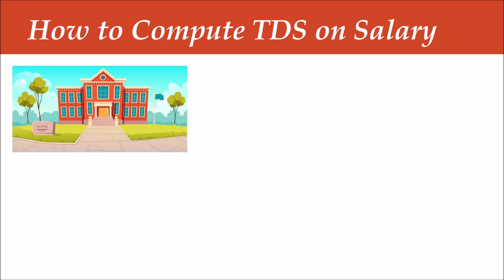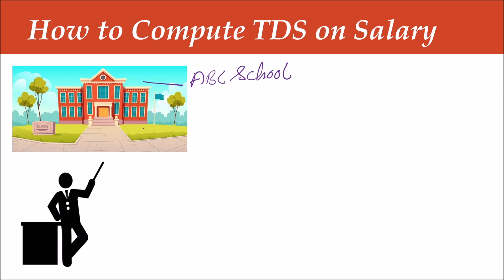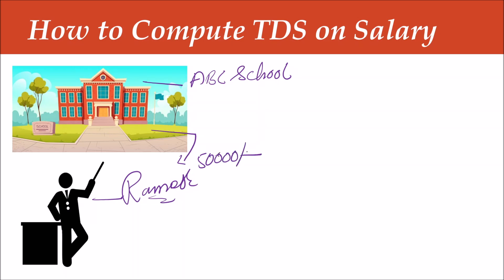For example, consider ABCD School. A teacher, Mr. Ramesh, has a salary of 50,000 rupees per month. So his annual salary comes to 6,00,000 rupees per year.